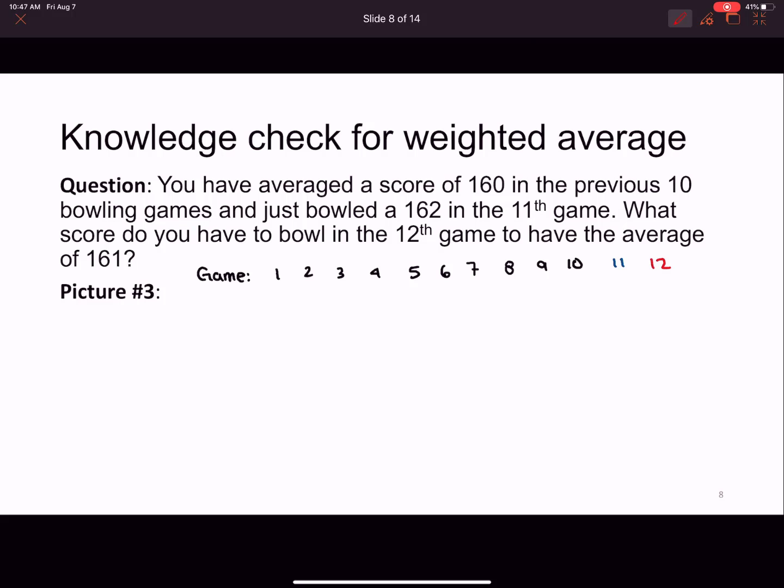So anyway, now I need to write down, I have all the games, I need to write down what score I got on all of the games. Now I know on the 11th one I got 162 because it says so right there. And then I definitely don't know what I got on the 12th one. I'm trying to figure that one out. Right. But do we know what we got on the first 10 games? The answer is no, we don't know. The only thing we know is that it averaged 160.